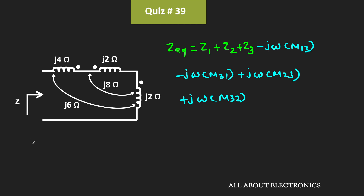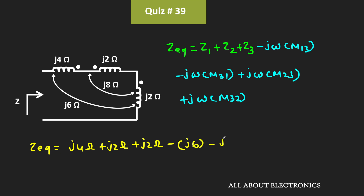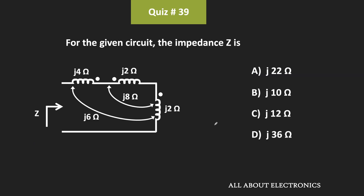That means the equivalent impedance seen from this side will be equal to j4 ohm plus j2 ohm plus j2 ohm, minus j6 ohm, plus j8 ohm. That equals j12 ohm. So the equivalent impedance seen from this side is j12 ohm, and from this we can say that option C is the correct answer.